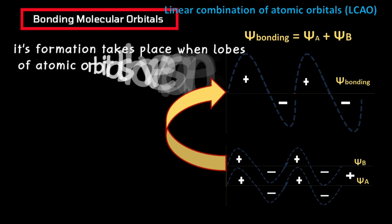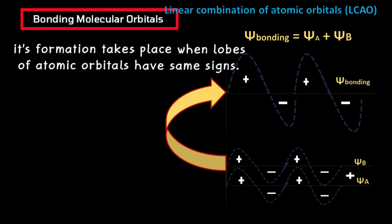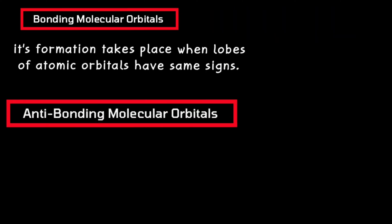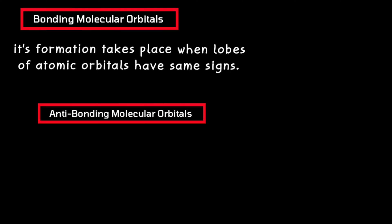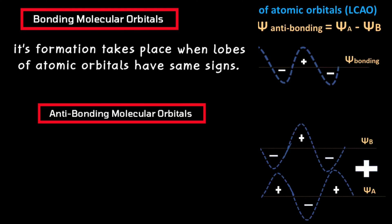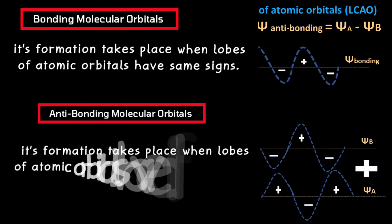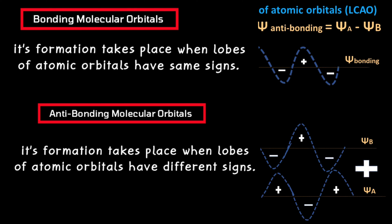Let us consider the last point of difference. Generally, bonding molecular orbital formation takes place when the lobes of the atomic orbitals have the same sign, while anti-bonding molecular orbital formation takes place when the lobes of the atomic orbitals have different signs, as shown in the diagrammatic representation.